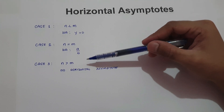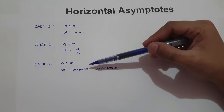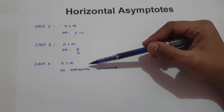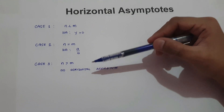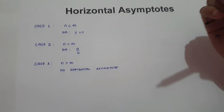And in case number three, if the degree of the numerator is greater than the degree of the denominator, then there is no horizontal asymptote.